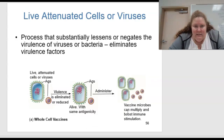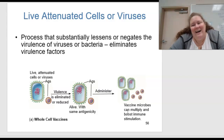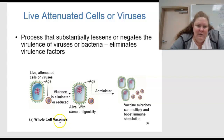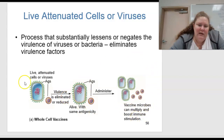The second type is live attenuated cells or viruses. This is the process that substantially lessens or negates the virulence of the viruses or bacteria, eliminating those virulence factors. Basically, you have a live cell, make sure it is not going to be virulent anymore, still alive with antigens, administer it, and then the microbes can multiply and boost immune stimulation, but it cannot cause disease.